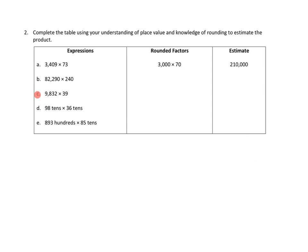Let's take a look at problem number two. Problem number two has different directions. Complete the table using your understanding of place value and knowledge of rounding to estimate the product. Let's look at their example. Their example in 3A is 3,409 times 73. This number would estimate to the nearest thousands would be about 3,000. And I see that's what they've written here. And this number right here, 73, if we rounded that to the nearest 10, would be 70.